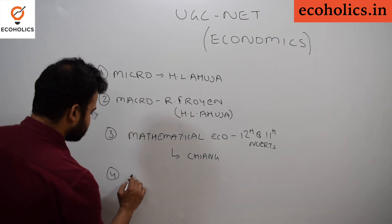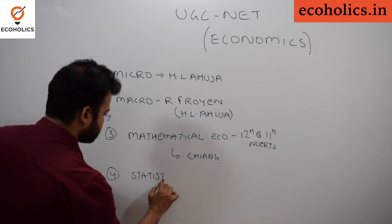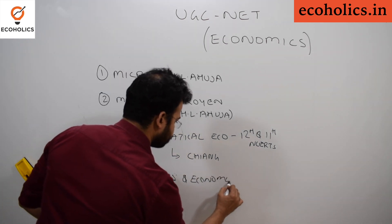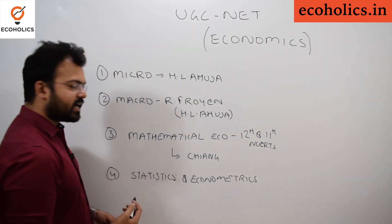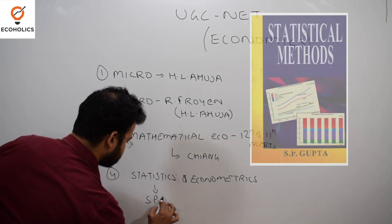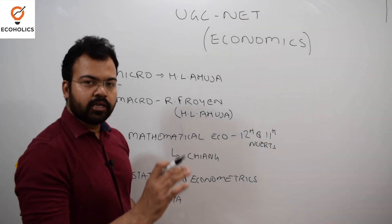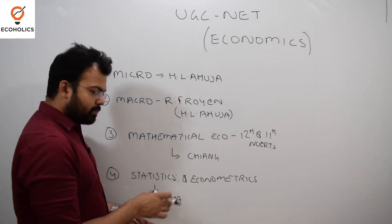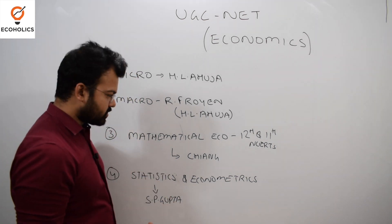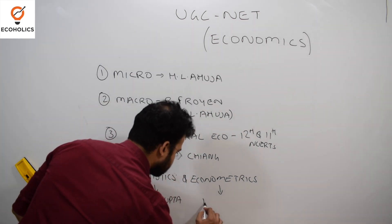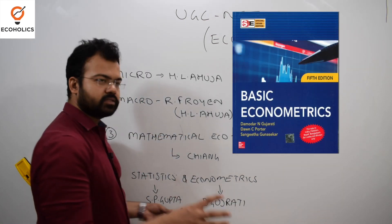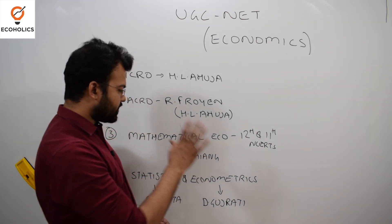The fourth division is statistics and econometrics. For statistics and econometrics you need two separate books. For statistics, refer to S.P. Gupta — although this book is quite bulky, you only need to pick out the topics mentioned in the syllabus, as it gives vast coverage of all topics. For econometrics, the best book is Damodar Gujarati. Pick the important topics from the syllabus and refer to this book.